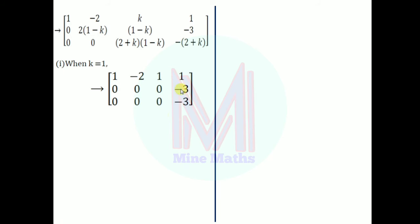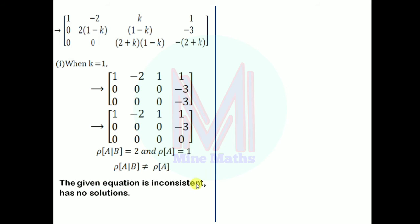Now simplifying row 3 by subtracting row 2, row 3 becomes complete zeros. So rank of augmented matrix [A|B] = 2, but for the 3×3 matrix A, since row 2 and 3 have only zeros in the coefficient part, rank of A = 1. Since rank(A) ≠ rank(A|B), the given equation is inconsistent and has no solution when k = 1.